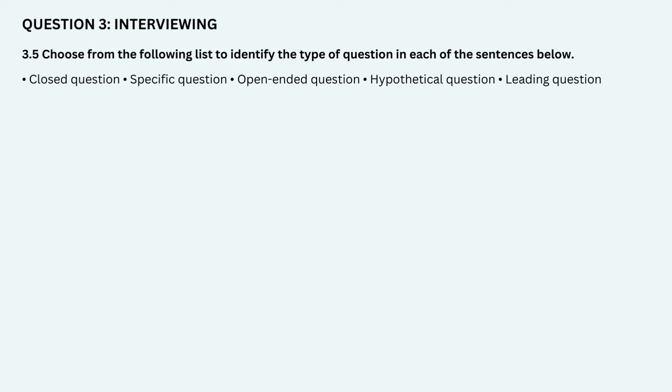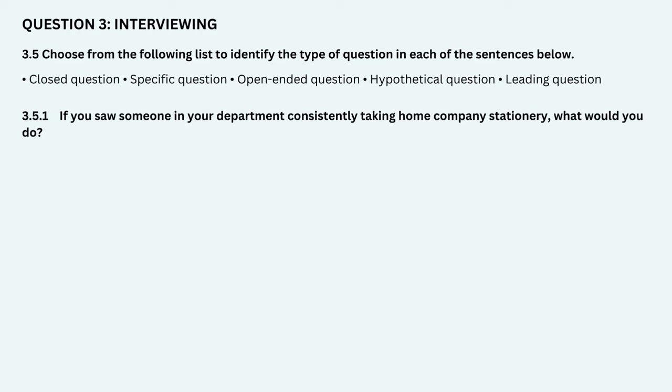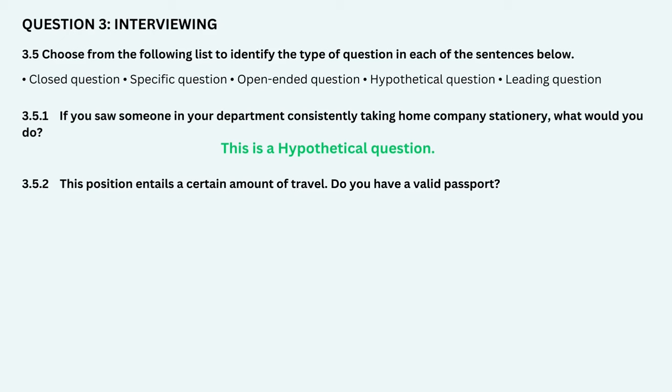Choose from the following list to identify the type of question in each of the sentences below. 1. 'If you saw someone in your department consistently taking home company stationery, what would you do?' — this is a hypothetical question. 2. 'This position entails a certain amount of travel. Do you have a valid passport?' — this is a closed question. 3. 'What is your opinion on punctuality?' — this is an open-ended question.